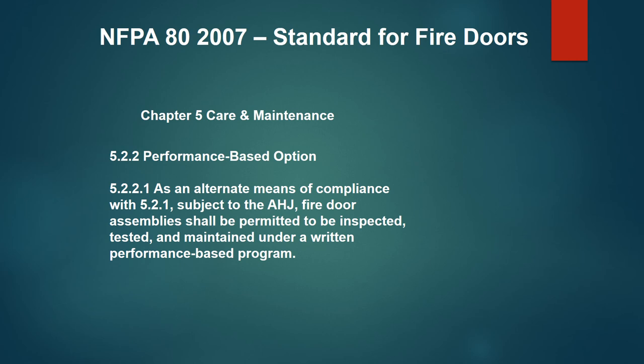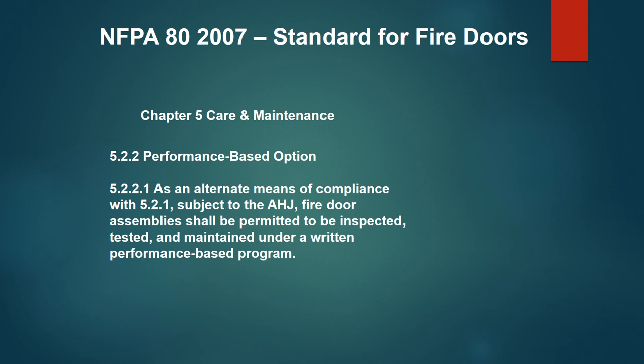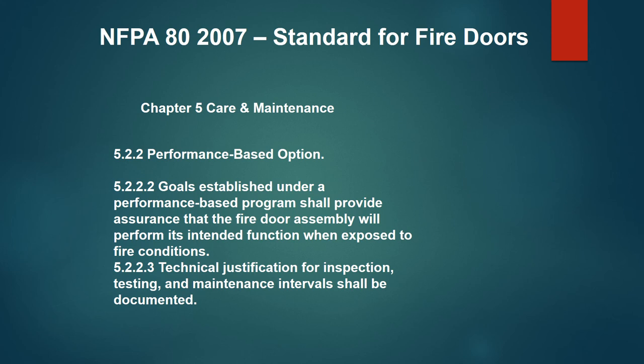The key is good data, good information, and a good inventory. Rotate which doors you check — don't always check the same hundred. Do a risk assessment: doors in high-use or high-equipment areas, or those more prone to failing, should be inspected every year regardless. Apply performance-based sampling to the lower-risk balance. The goals of the performance-based program shall provide assurance the fire door assembly will perform its intended function when exposed to fire, and the technical justification for inspection and maintenance intervals must be documented.